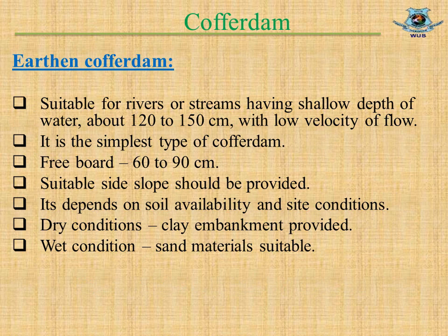Some characteristics of Earthen Coffer Dams: suitable for rivers or streams having a shallow depth of water, about 120 to 150 cm, with low velocity of flow. It is the simplest type of Coffer Dam. Freeboard 60 to 90 cm. Suitable site slope should be provided, depending on soil availability and site conditions.